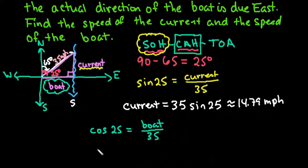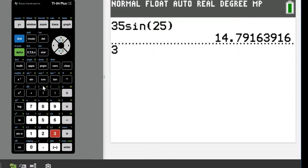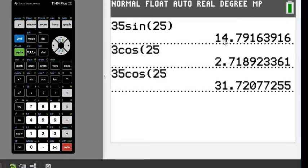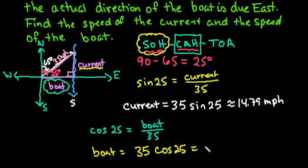So to find our boat speed, we would just do 35 cosine of 25. Oh, I missed it, it didn't register my 5. Let me try that again. 35 cosine 25, which gives us 31.72. Not degrees, miles per hour.